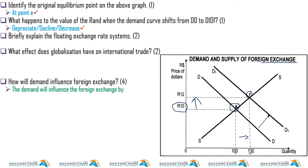Let's say this happened throughout the day — that would be a big drop, and it's normally abnormal for this to happen. If it does, we can say that the rand is very unstable. This could take time to happen, but let's say it changes from 10 to 12.